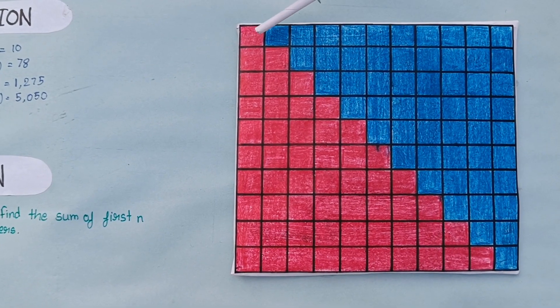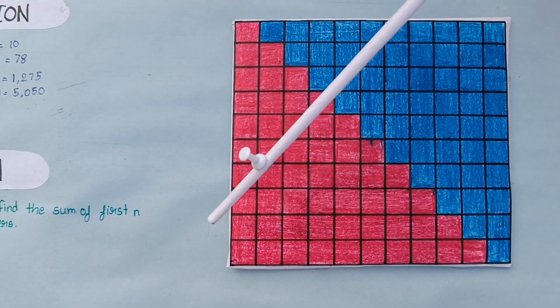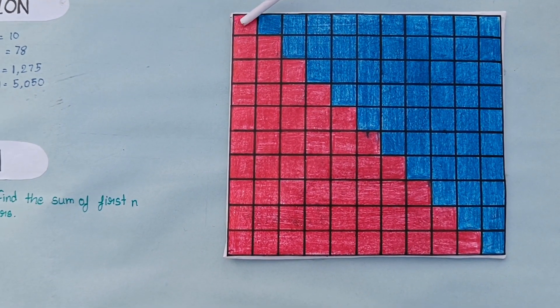In first stair, there is 10 boxes. In second stair, there is 9 boxes. Up to uppermost stair having 1 box.